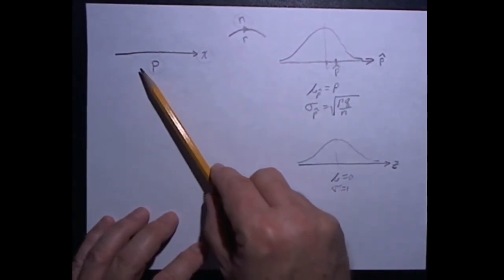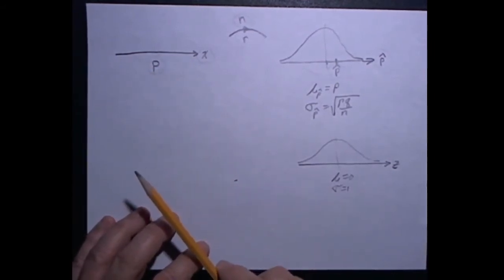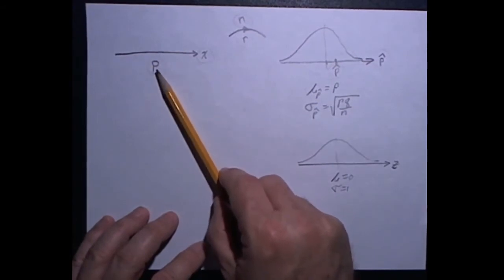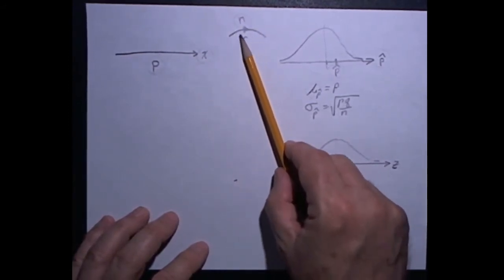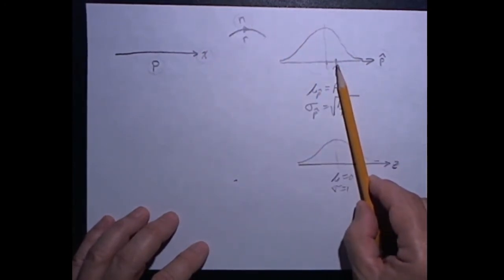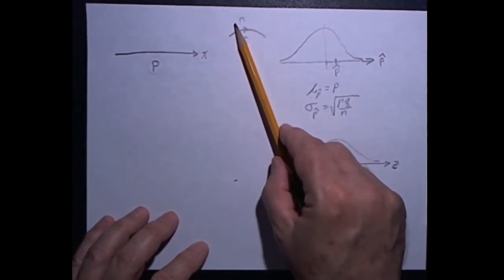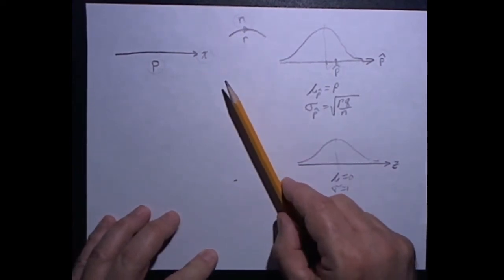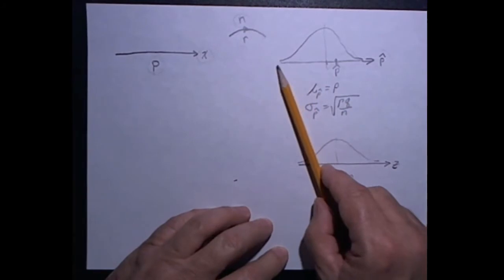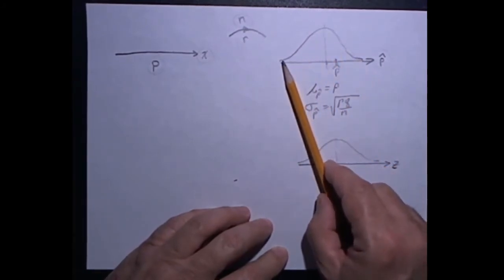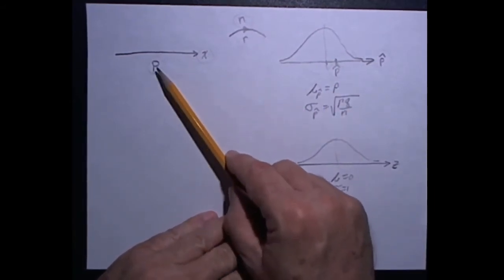In the case that we're looking at a categorical variable, the parameter we're interested in is the proportion of the population that satisfies that category. We don't know the entire population, so we can't find that proportion directly. We do a point estimate by taking a sample of size n, counting up the number of successes r, and calculating the sample proportion, which is r divided by n. Under the right circumstances, if we looked at every possible sample of size n and calculated the proportion for each, we'd get a distribution of sample proportions that is normally distributed, and the mean of that distribution turns out to be the parameter we're looking for.